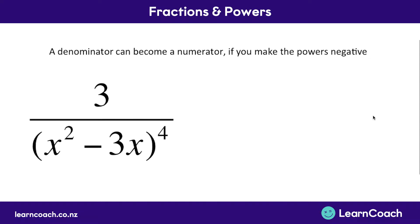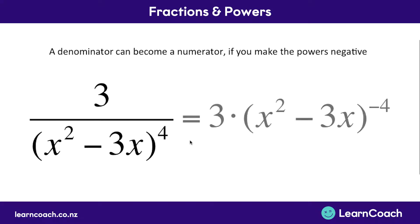So there are all sorts of examples. You can have a big complex denominator that's say to the power of 4. You can bring that whole thing up to the top of the fraction, up next to this 3, as long as you make the power a negative — for example, negative 4.